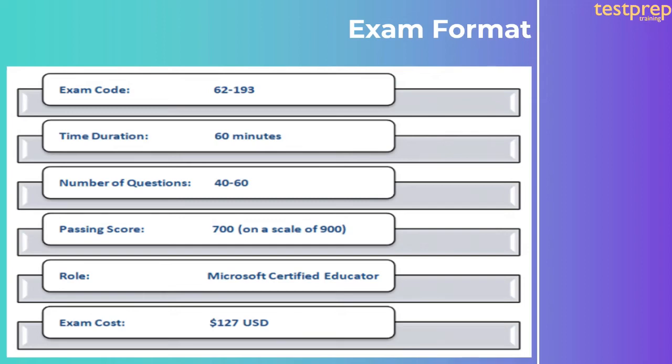To pass the exam it is required to score a minimum of 700 on a scale of 900. The exam will cost 127 US dollars including additional taxes. Candidates can give the exam in English, German, French, Chinese, Spanish, Portuguese, Russian, Polish, Japanese, and Turkish.